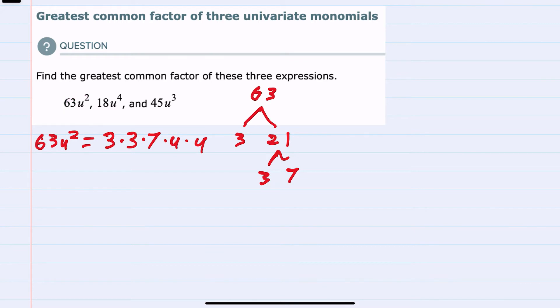Moving now to the 18u⁴, I'll again start with the 18. Breaking 18 into its prime factors, it could be written as 2 times 9, and 9 could be broken down further into 3 times 3. So that 18u⁴ would be written as 2 times 3 times 3, and then I have four u's.